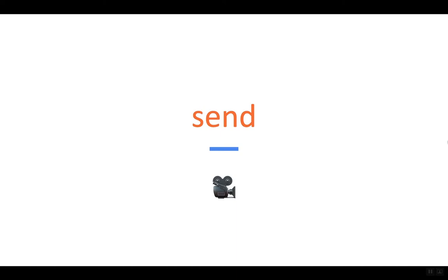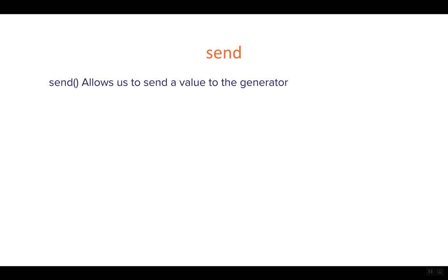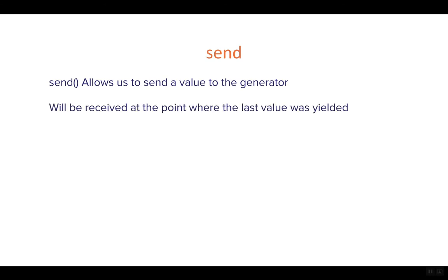Let's have a look at the send method. The send method allows us to send a value to our generator. We know that generators can yield multiple values to whoever is calling them, but that functionality can also provide values back to our generators. Those values might in some way influence the production of new values.